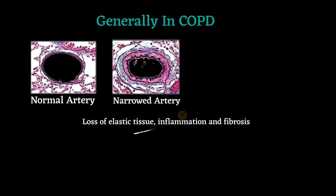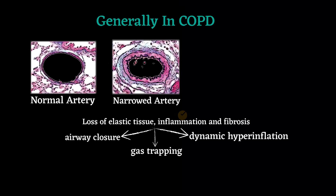Inflammation and fibrosis in the airway wall result in premature airway closure. Gas trapping and dynamic hyperinflation lead to changes in pulmonary and chest wall compliance.